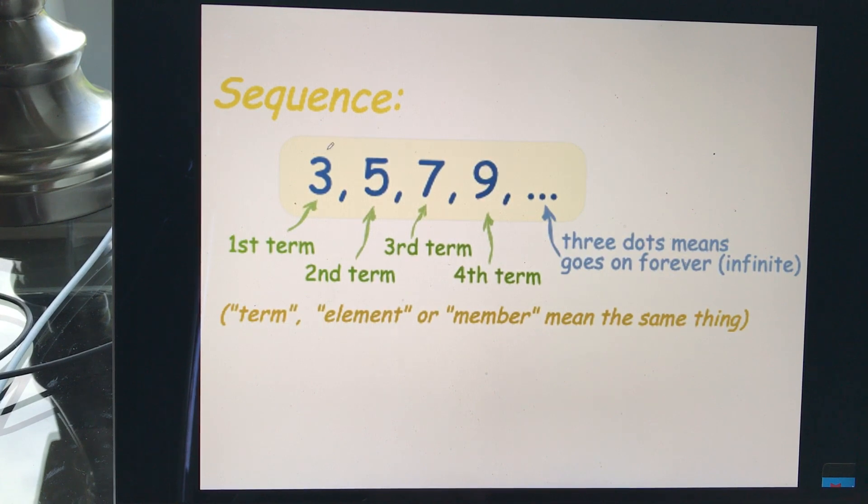So here's this 3 is the first term, the 5 is the second term, the 7 is the third term, and so on. And these three dots actually mean something. These three dots mean it goes forever. So I don't just stop at 9 because I just stopped writing the number 9. The dot, dot, dot means it keeps going for us.